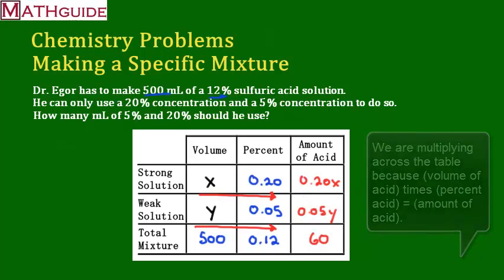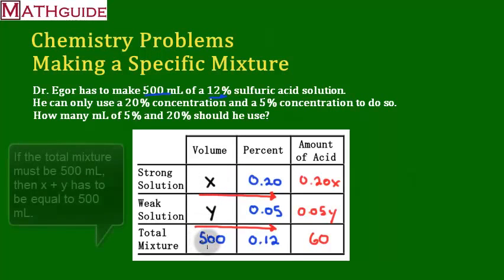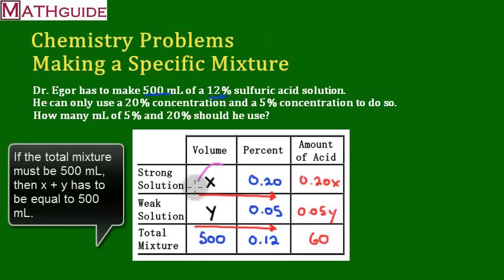All right, now it turns out that once we complete this table by the process that I just showed you, it turns out that there's two equations here. I should know that the strong solution we use plus the weak solution should be equal to 500 milliliters.